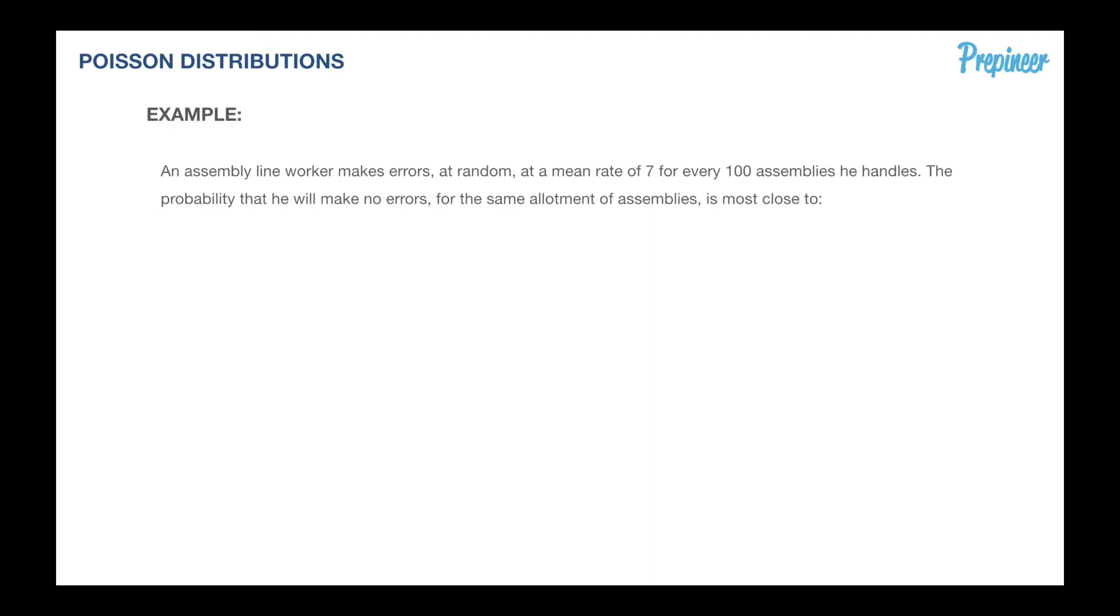Let's head back to our first example problem. An assembly line worker makes errors at random at a mean rate of seven for every hundred assemblies he handles. What are the chances he makes no errors? First, we got to realize that this is a Poisson distribution. He's making errors and they're random. The mean rate throughout the whole experiment is going to remain constant at a rate of seven for every 100 assemblies he handles. What is the probability that he makes no errors in this same allotment of 100 assemblies?